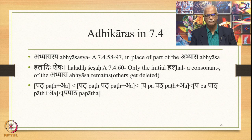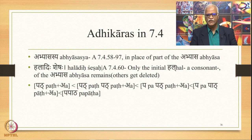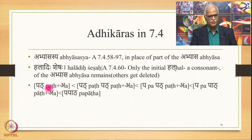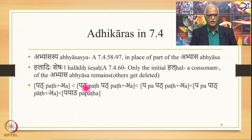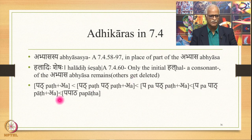The important Adhikara in 7.4 is Abhyasasya — 'in place of part of the Abhyasa'. The rule Haladi Shesha 7.4.60 says that only the initial consonant of the Abhyasa remains — others get deleted. For the derivation of perfect forms of Patha in Lit Lakara: Patha plus Lat, Patha plus Ta, Patha plus A. Now we get reduplication: Patha Patha A. The first part is called Abhyasa by definition — Puro Dvabhyasa. In this Abhyasa there are two consonants P and Th; Haladi Shesha says only the initial consonant remains, so Th gets deleted. We have Pa Patha A; then A gets lengthened, giving Pa Patha A, and finally the form Papatha.